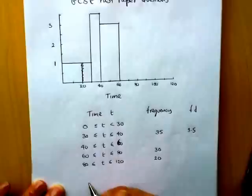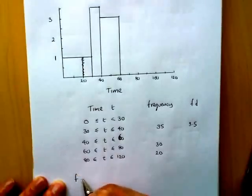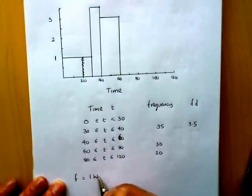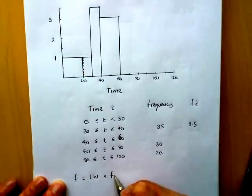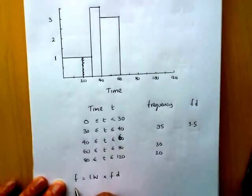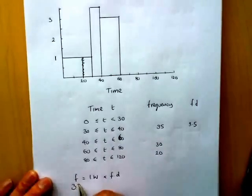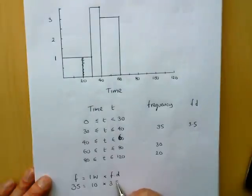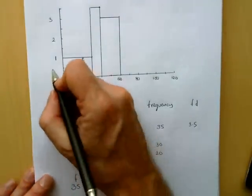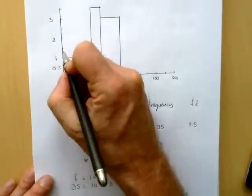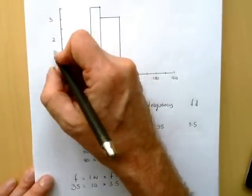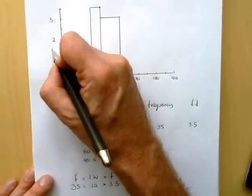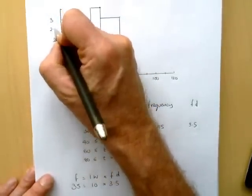The frequency is 35, and the interval width was 10, so I'm going to need to multiply by 3.5. And that establishes the scale on the rest of the vertical axis.